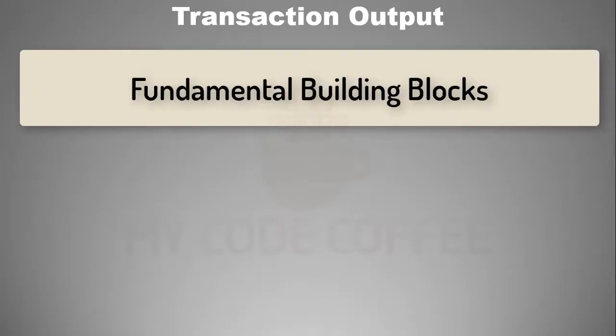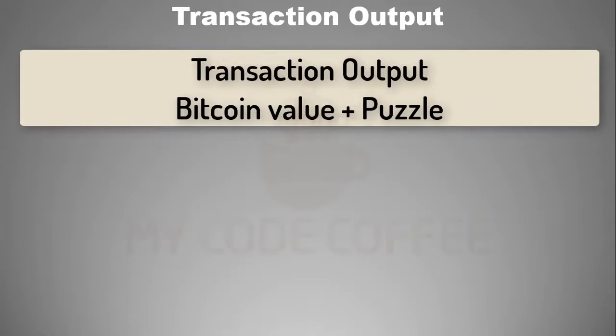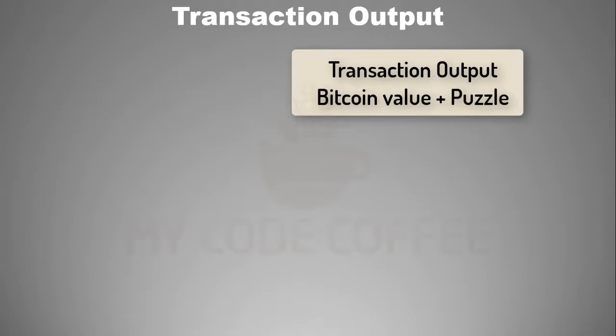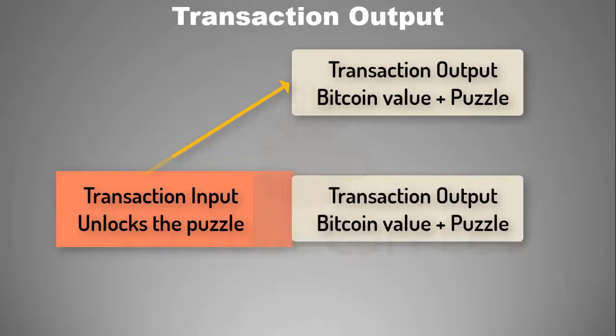A transaction output is the indivisible chunk of Bitcoin value along with a puzzle that you must solve if you want to spend this Bitcoin. When you spend a transaction output by solving its puzzle, new transaction outputs are created and the earlier transaction output becomes dead or spent.